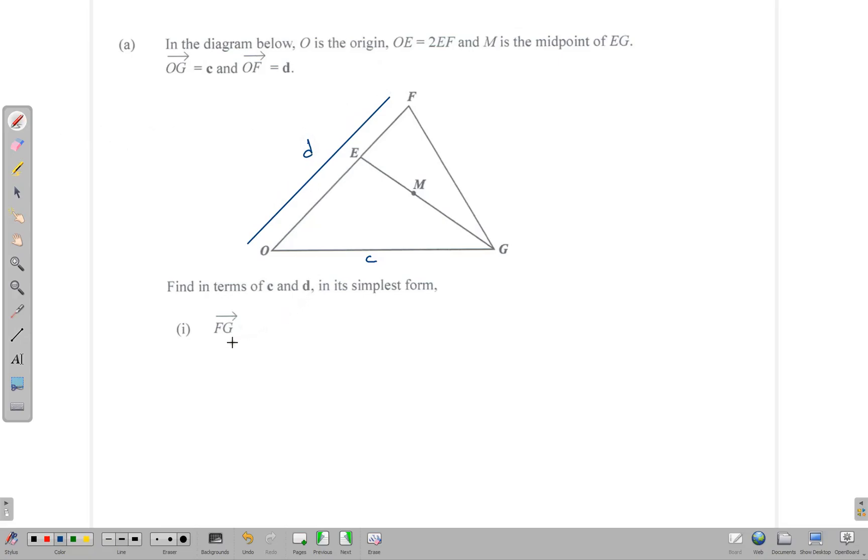So first up we are asked to find FG. Now FG is here. So if we want to get from F to G, assuming that you can't go directly there, then we need to find another route. And the other route is to say, to get from F to G, we can go F to O and then go from O to G.